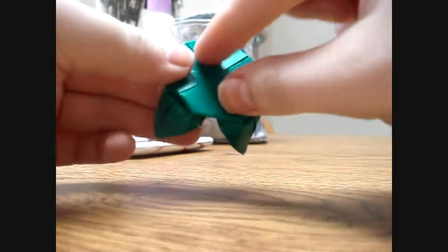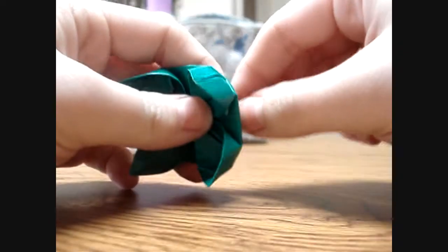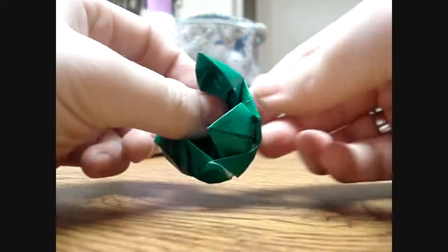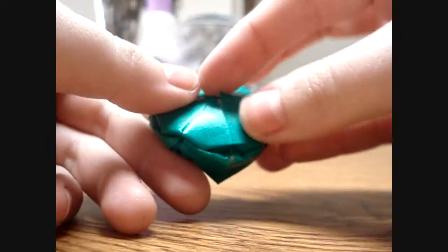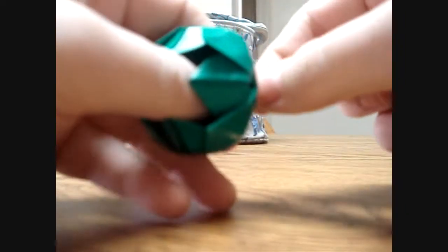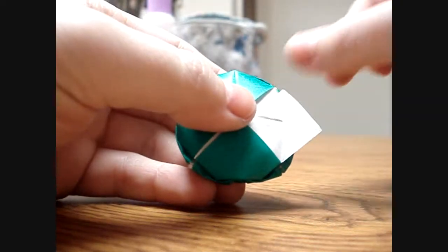Once you finish that, you're going to take the next layers of flaps from underneath and you're going to also fold those out as far as they'll go without ripping. So those are going to be slightly turned inside out, but not as much as the ones before. Kind of ripped it there, but let's go.